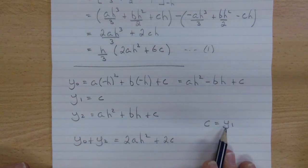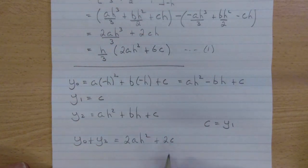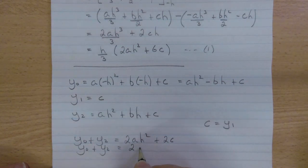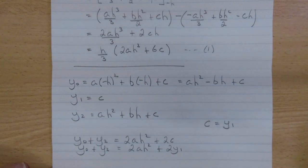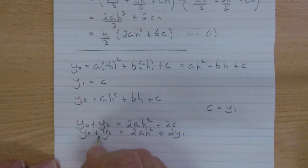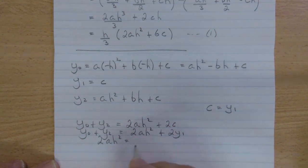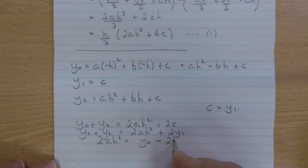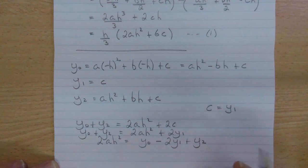Fortunately, we have a result for c here. c equals y1. So I'll substitute that. y0 plus y2 equals 2 a h squared plus 2 y1. And then I'll move all of the, I'll move the 2y to the other side. So I'll transpose slightly. 2 a h squared equals y0 minus 2 y1 plus y2.